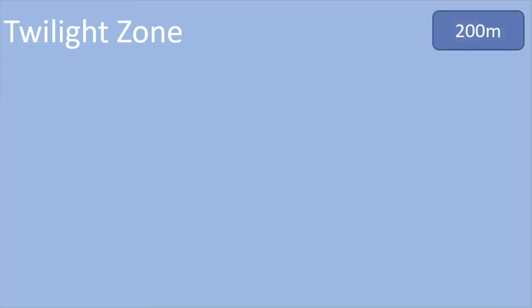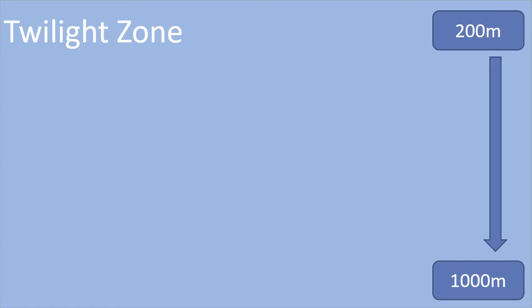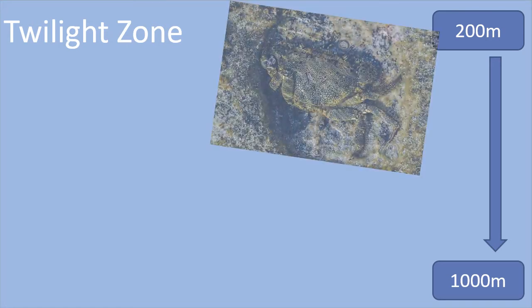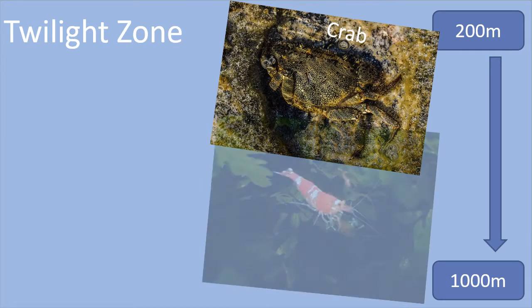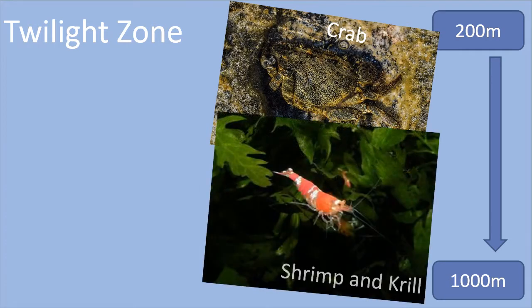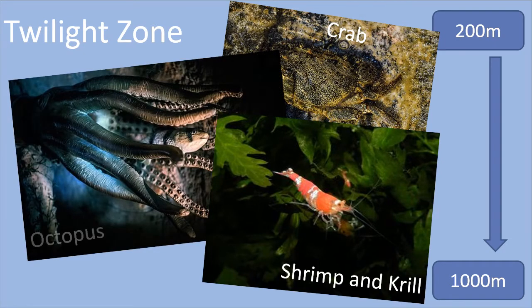The twilight zone begins at a depth of 200 metres and goes down to a depth of 1000 metres. Animals such as the crab, shrimp and krill, and the octopus can live in this zone. It receives a small amount of sunlight, just enough for organisms to grow, but it is quite dark.